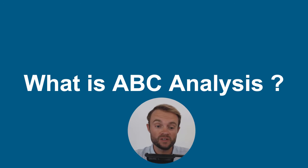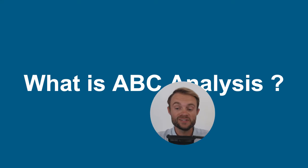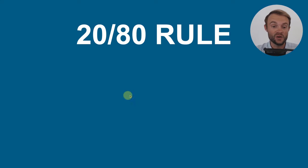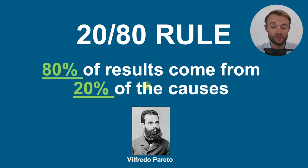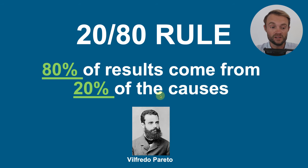Before using Excel, I wanted to come back to what is exactly ABC analysis. ABC analysis is coming from the 80/20 rule. This is a really famous rule coming from Vilfredo Pareto, and basically this rule tells you that 80% of your results come from 20% of your causes.